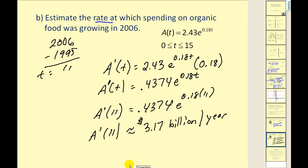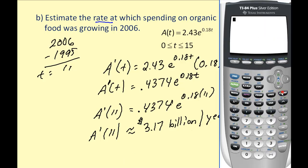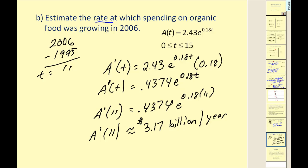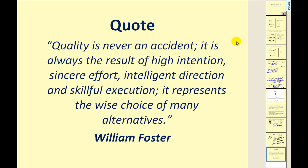A graphing calculator can verify derivative values at a specific point. Using the math key and scrolling to option 8, type in the original function using x instead of t, then a comma, x, comma, and the value 11. The calculator returns the same answer, which is a nice way to check — though your instructor will want you to show the full derivative function. That covers how to find the derivative of exponential functions. Thank you for watching.